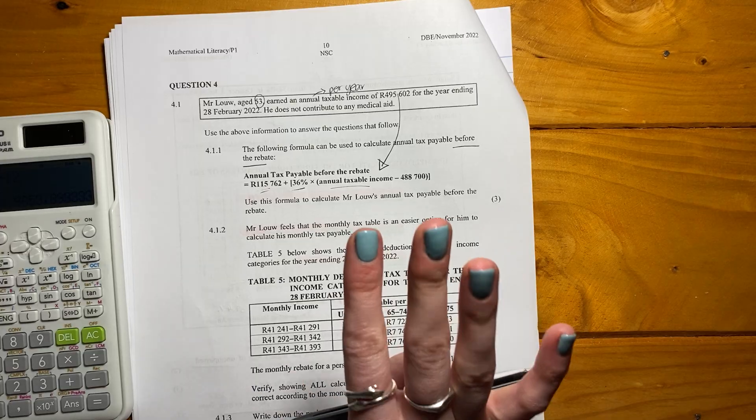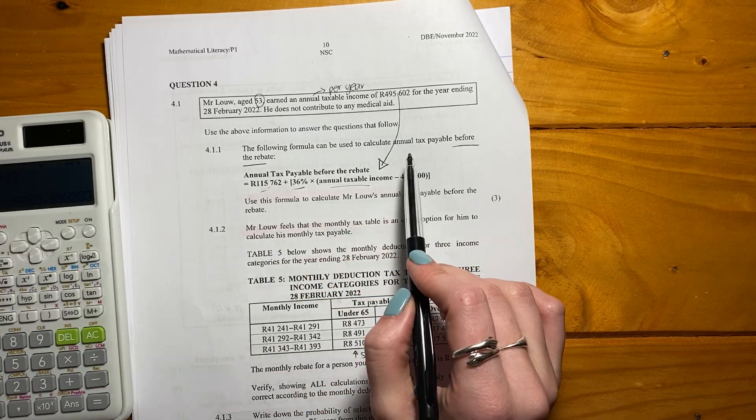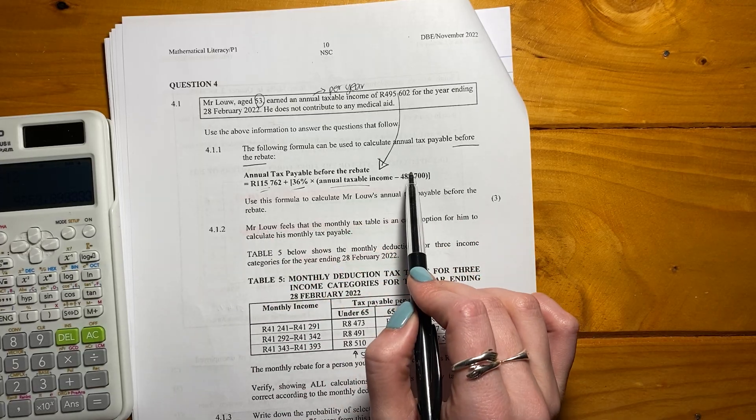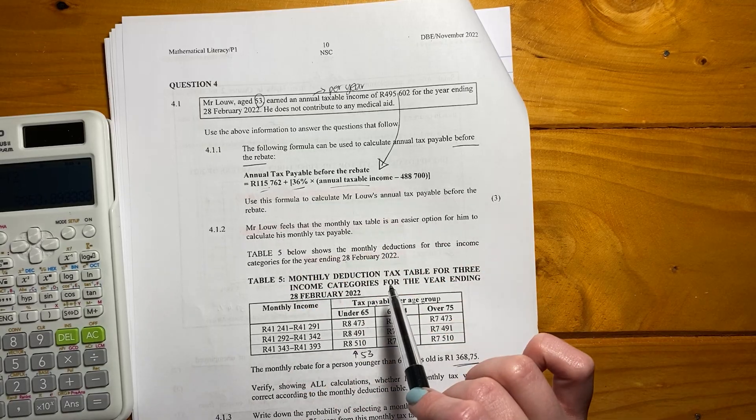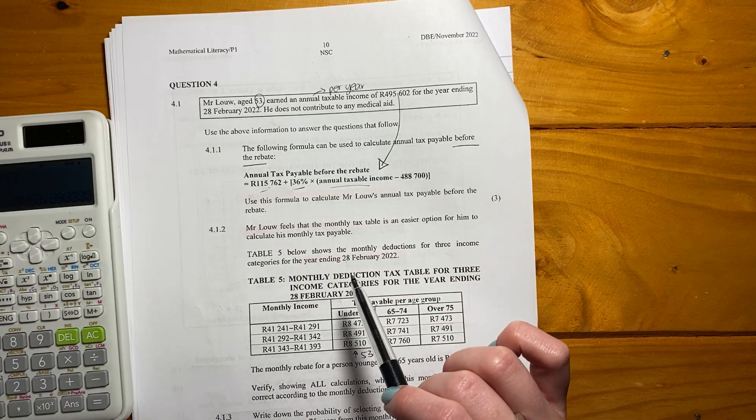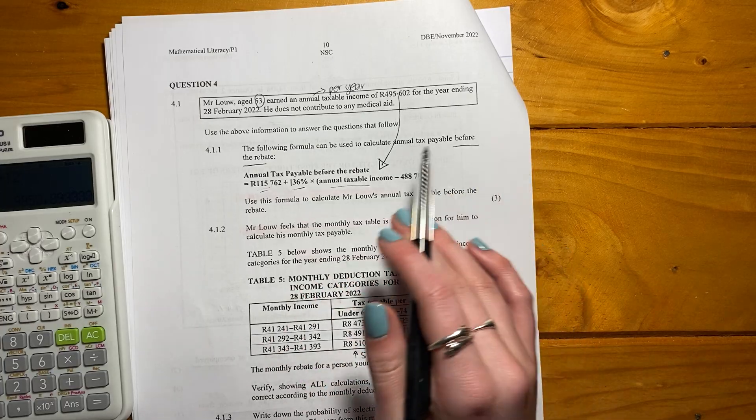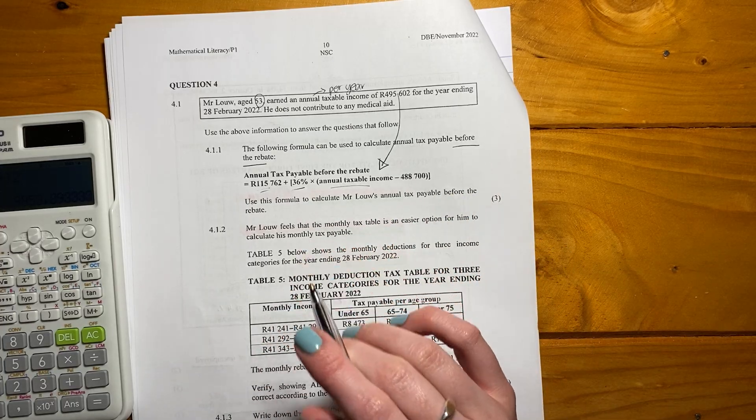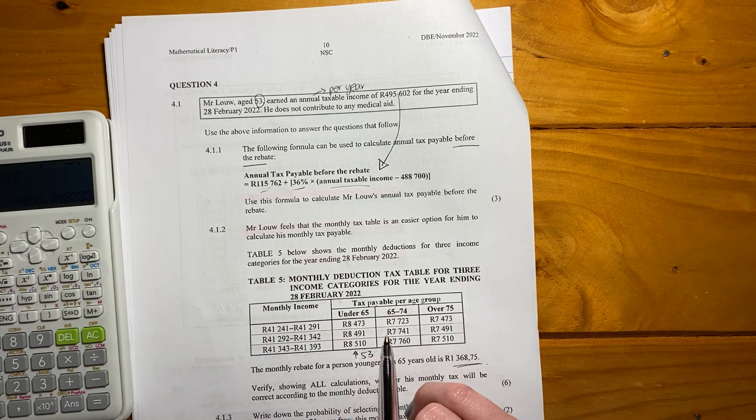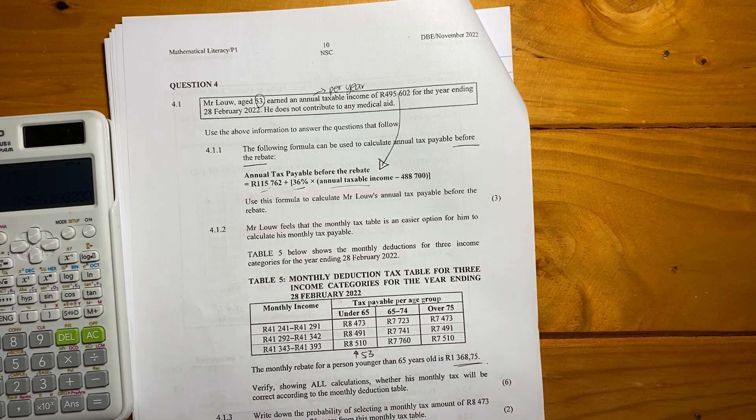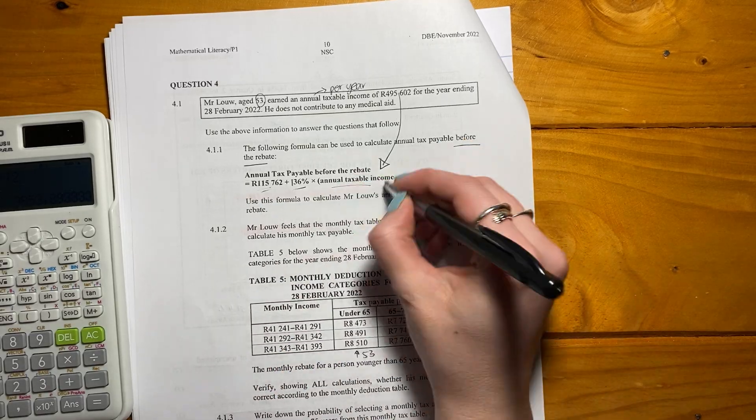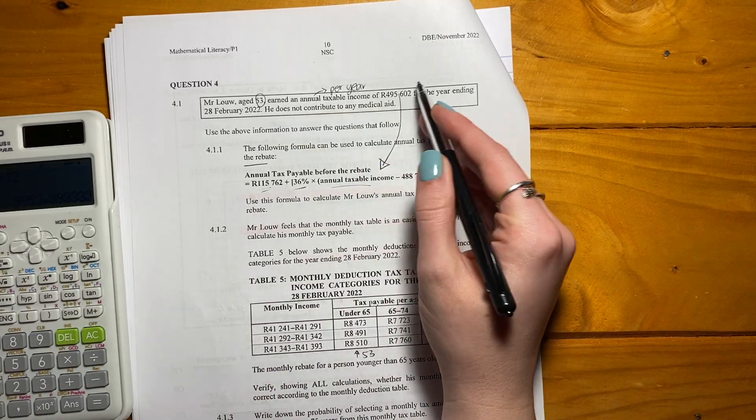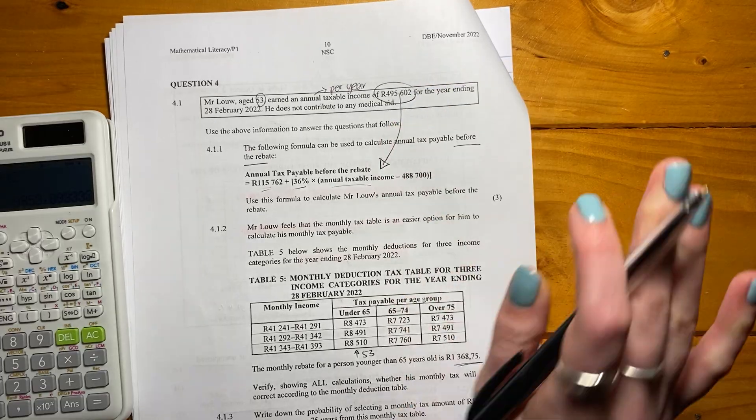So then let's look at the first question. It says use the above information to answer the questions that follow. The following formula can be used to calculate annual tax payable before the rebate. So we're not looking at rebates. We're just saying, what would he pay in tax if there were no rebates? Now they've been very kind in that they've actually given you the formula. Generally, they don't give you a formula here and you have to go and look it up in a tax table.